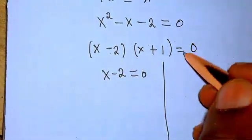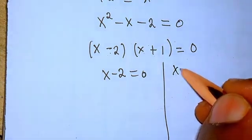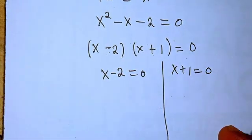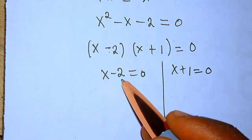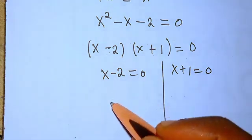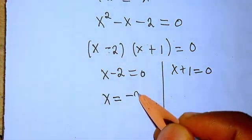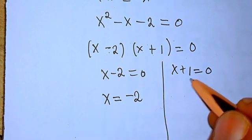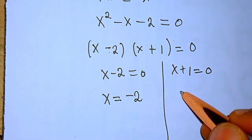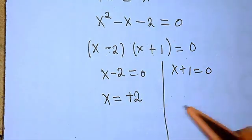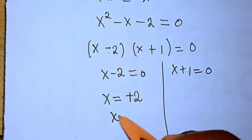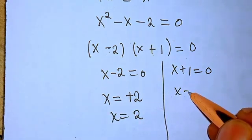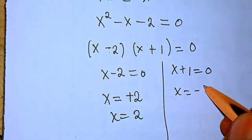Transposing, from x minus 2 equals 0 we get x equals 2, and from x plus 1 equals 0 we get x equals minus 1.